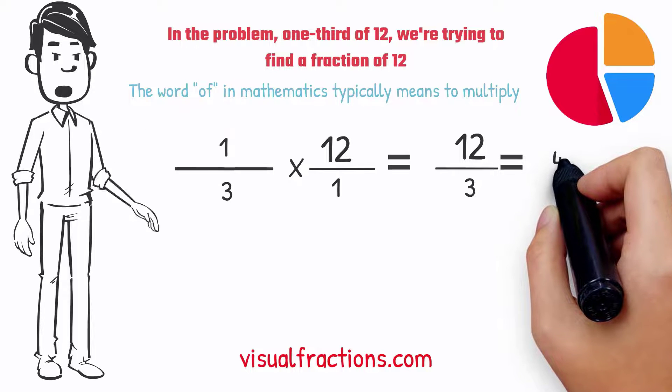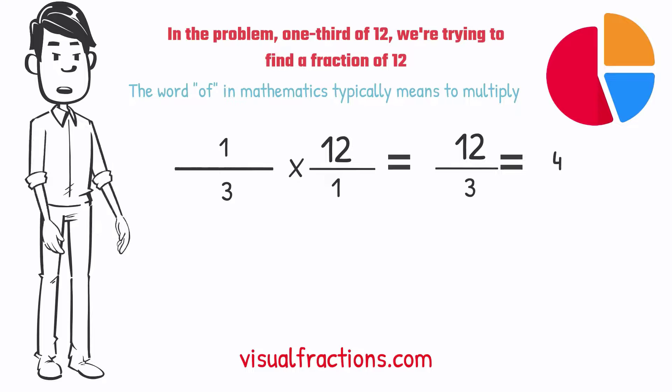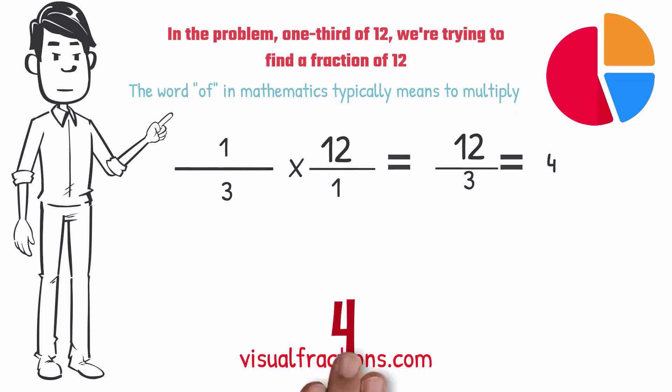So, 12 divided by 3 equals 4. And there you have it. One-third of 12 is 4.